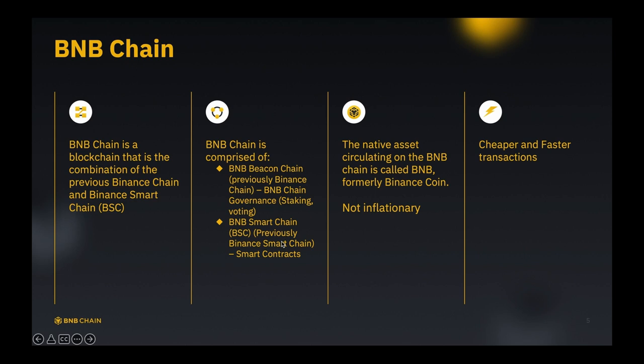BNB Beacon Chain is responsible for BNB chain governance and serves as the basic infrastructure. BNB Smart Chain is where it supports smart contracts and DApps, which we will focus on more. The native asset circulating on the BNB chain is called BNB — before it was called Binance Coin. One thing to notice about BNB is that BNB is not inflationary. That means there won't be more and more BNB generated automatically. Instead, the BNB team will destroy some BNB coins regularly, so the number of BNB coins will decrease gradually.